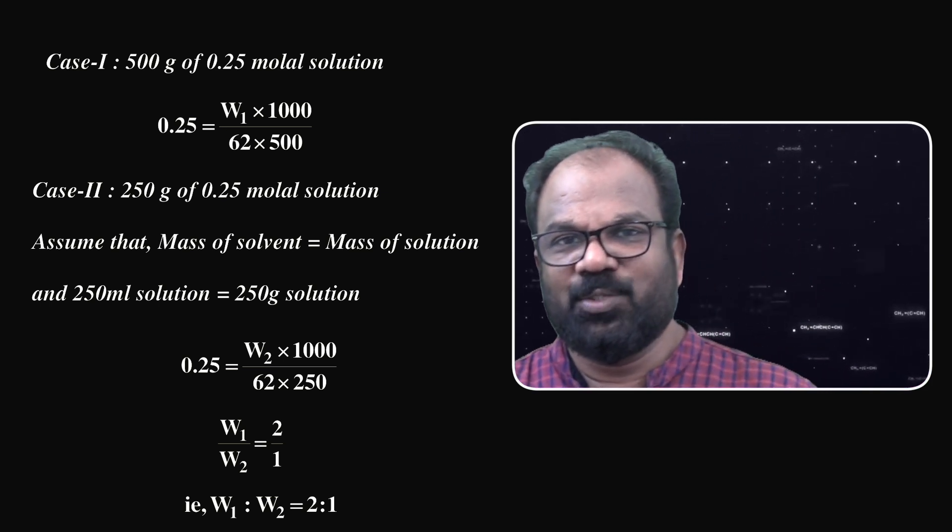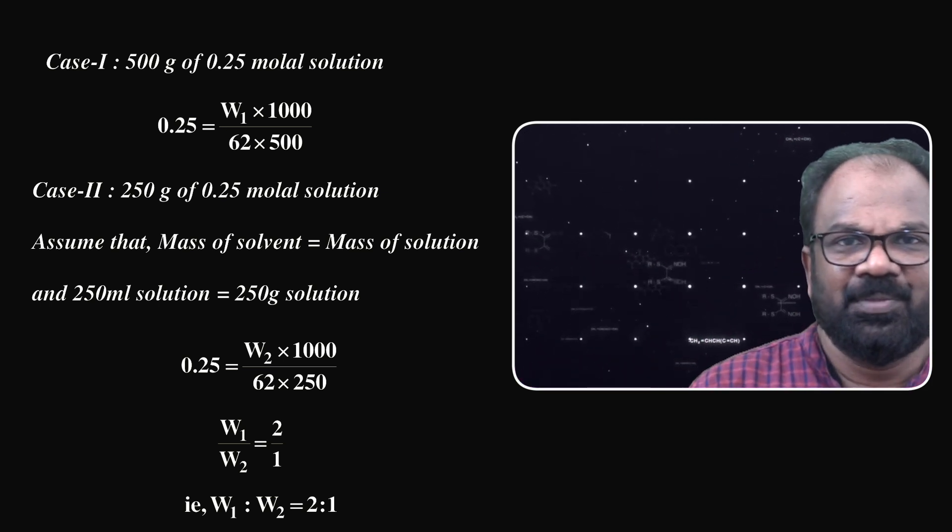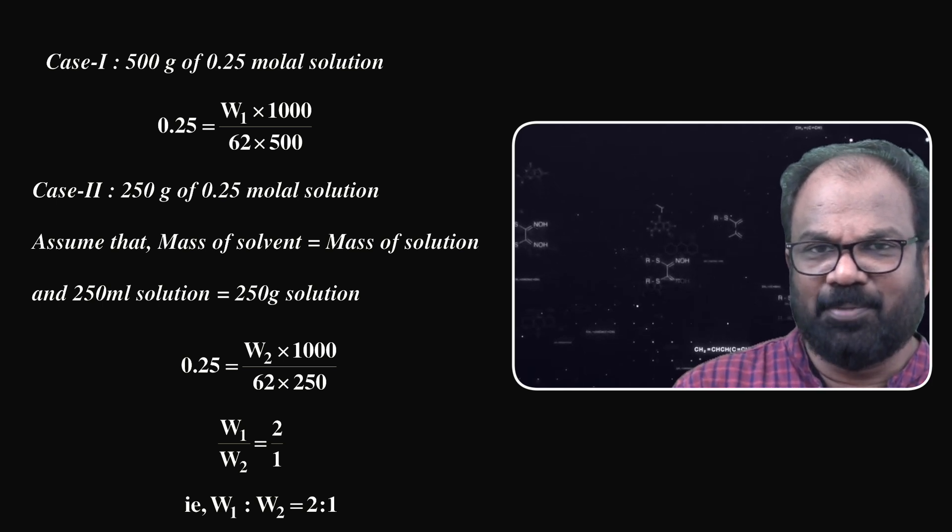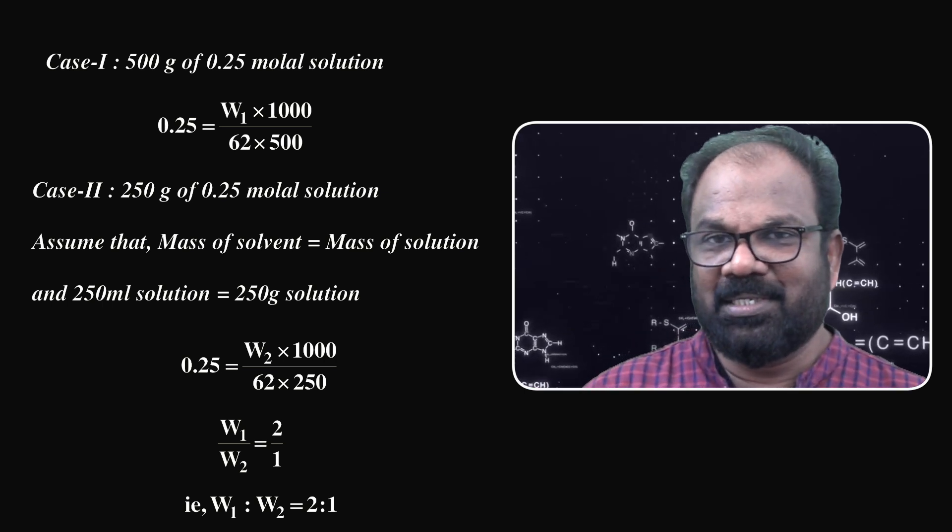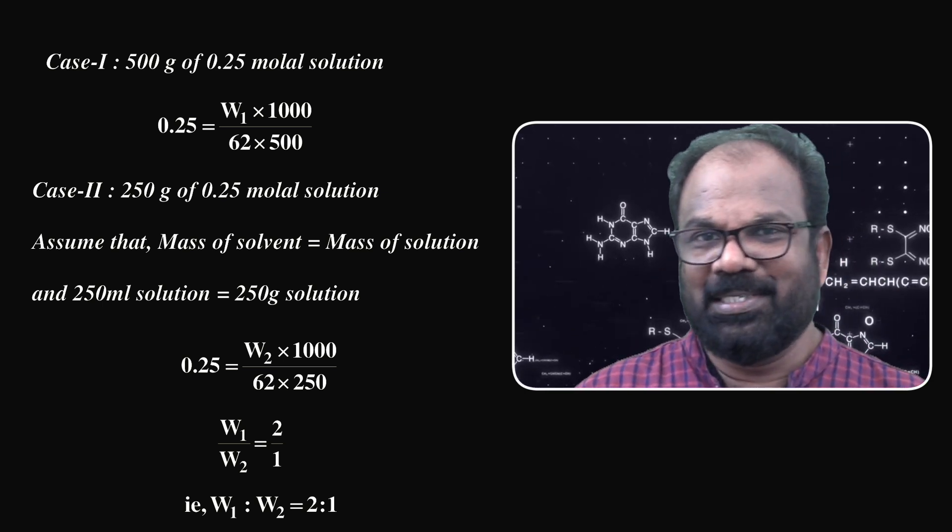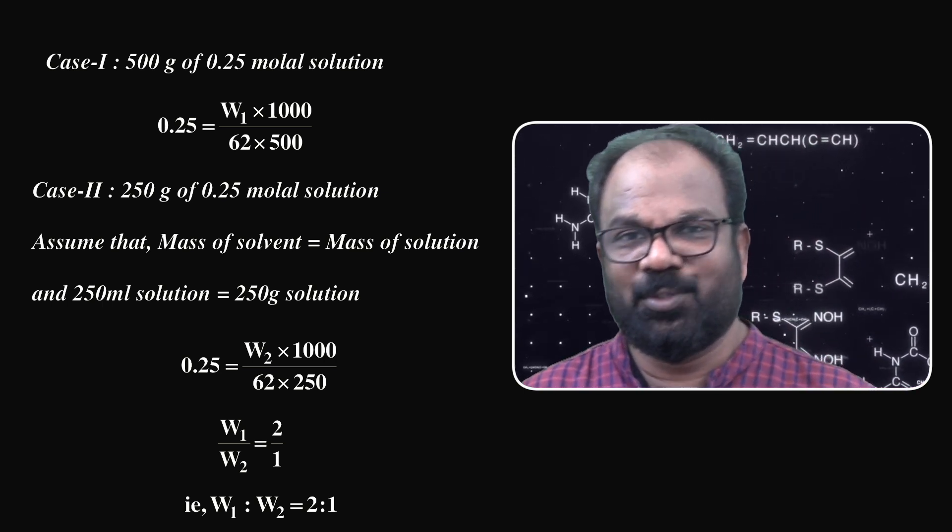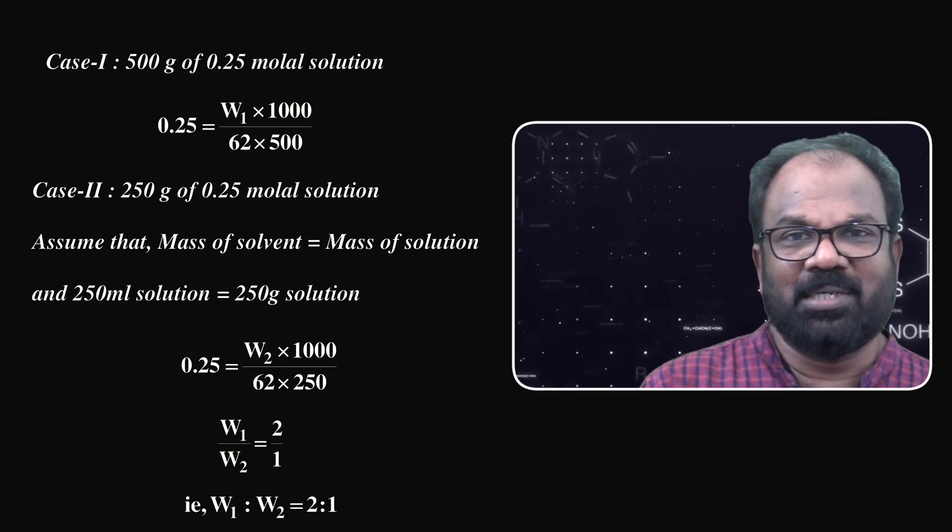This equation is taken as equation 1. In the second case, molality is the same: 0.25 equals weight of solute W2 times 1000 divided by molecular mass of 62 times weight of solvent 250. This equation is taken as equation 2. Then divide equation 1 by 2.